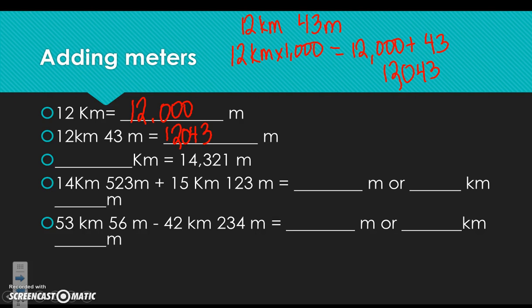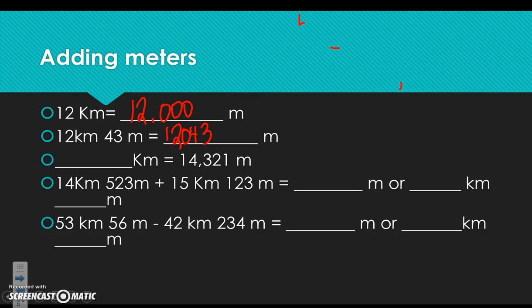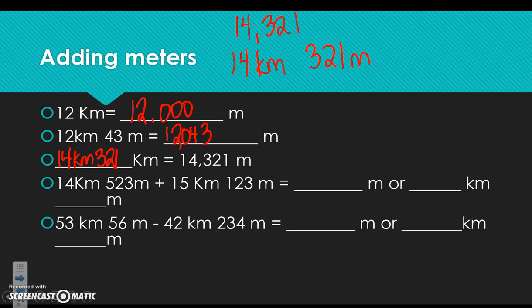Going the other direction, anything in the thousands place equals kilometers. So if I have 14,321 meters, the 14 is my kilometers and the 321 is my remaining meters — giving me 14 kilometers 321 meters.